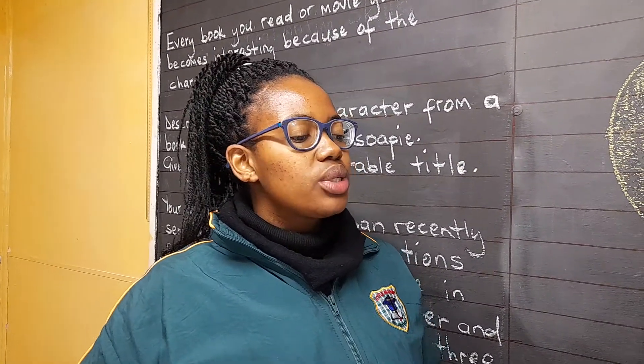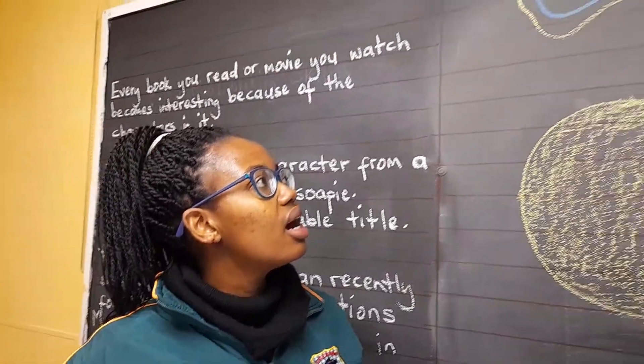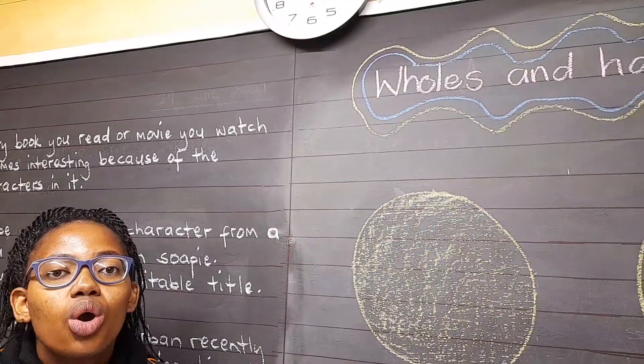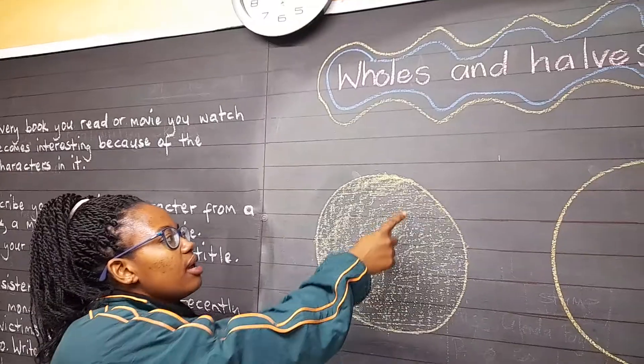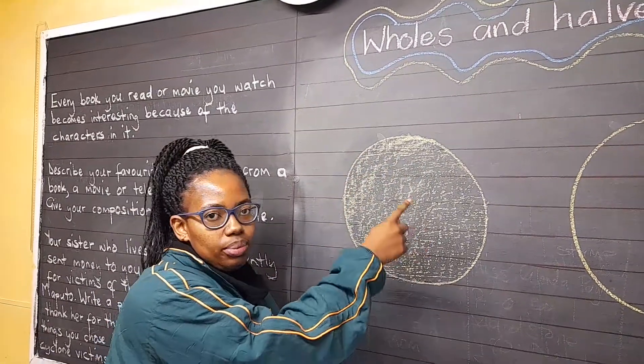Good afternoon, Grey Twos, my lovely little angels. Today's topic is about wholes and halves. What is a whole? A whole is a full, complete shape.